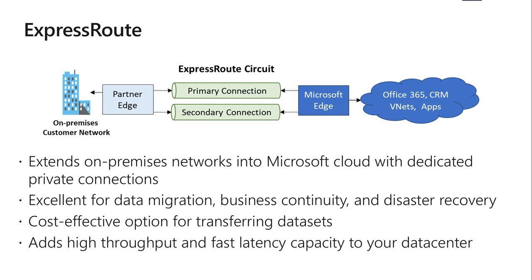Typically when we do a network assessment or network planning for a customer — whether they're purchasing Azure or Office 365 — we always say that if you can access the internet, then you can access Microsoft Azure or Office 365. However, you have to understand that Azure is not the internet; they are two separate things. The internet is where you find Google, YouTube, Facebook. But Azure itself has its own network, which Microsoft claims is the third largest network in the world — the first might be the internet itself, the second might be Google or Amazon.